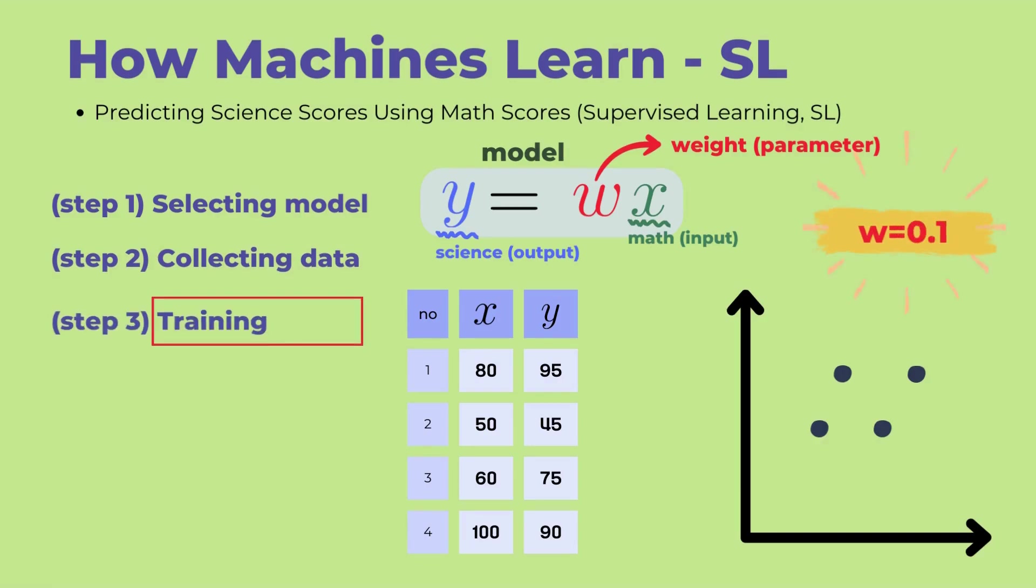Once the model has been selected and data collected, we can proceed with the actual training process. For reference, the process of a model learning is also referred to as training. Initially, parameters and weights are set randomly. In this example, let's assume the initial random value of parameter W is 0.1. Since the current W is 0.1, the model is represented by the function Y equals 0.1X.